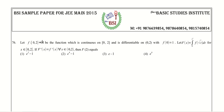Let us solve question 76, which says: let f from [0,2] to the set of real numbers be a function which is continuous on the closed interval [0,2] and differentiable on the open interval (0,2), with initial condition f(0) = 1. We are given capital F(x) as the integral from 0 to x² of f(√t) dt.